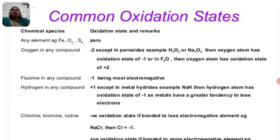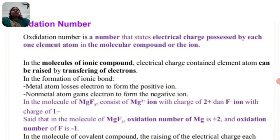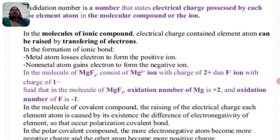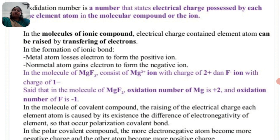The oxidation number is a number that states the electrical charge possessed by each element atom in a molecular compound or ion in an ionic compound. The electrical charge on an element atom can be raised by transferring electrons in the formation of an ionic bond. Metal atoms lose electrons to form positive ions, and non-metal atoms gain electrons to form negative ions.